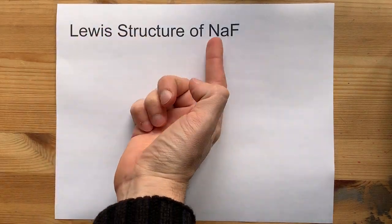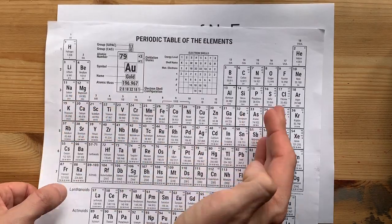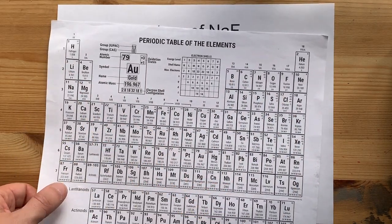Let's draw the Lewis structure for sodium fluoride. Sodium is a metal because it comes from the left-hand side of the staircase. It's an alkali metal.